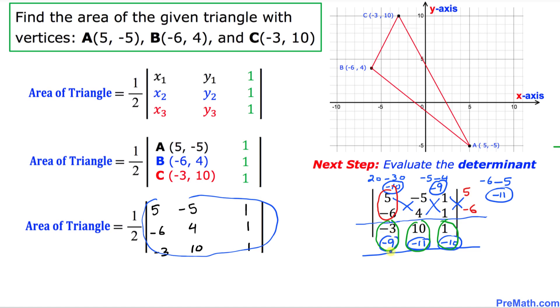That's going to give us negative 3 times negative 9 is positive 27, and that's going to give us negative 110, and that is going to give us negative 10.